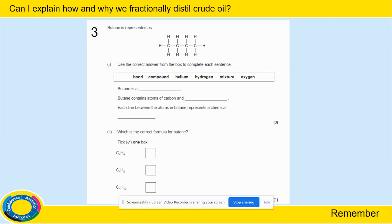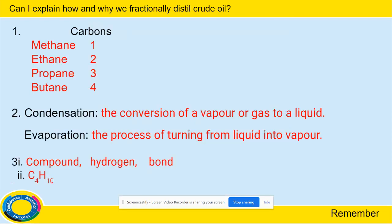Exam question — still reminding you about what you did last lesson. Fill in the missing words and decide which is the formula for each term. Again, the answers will be on the next slide. Check all your answers, correct anything you need to in red, and then move on.